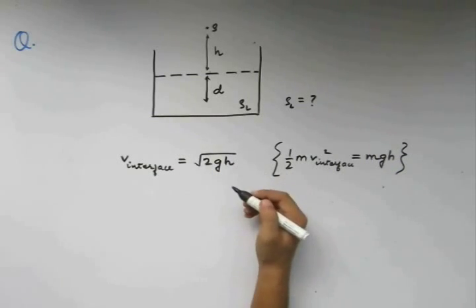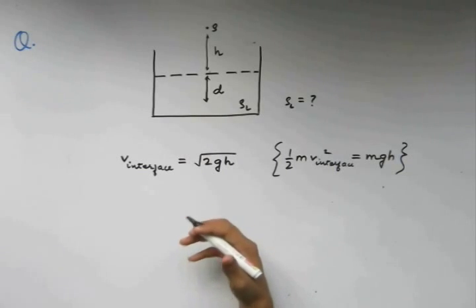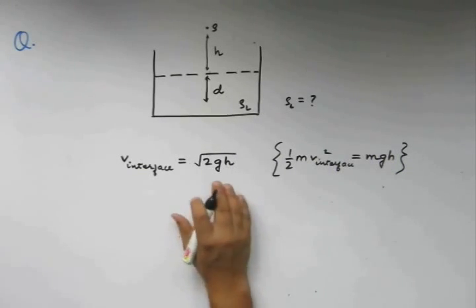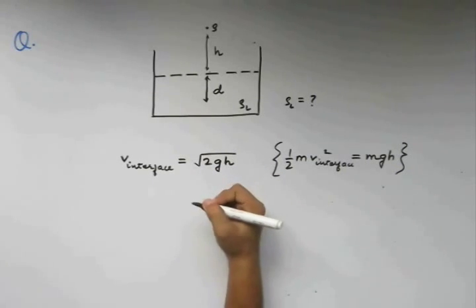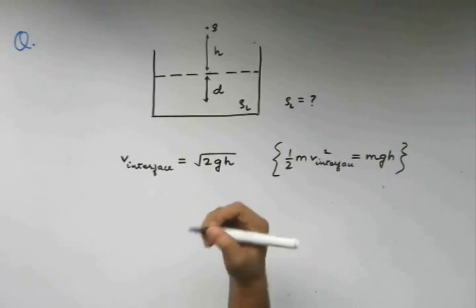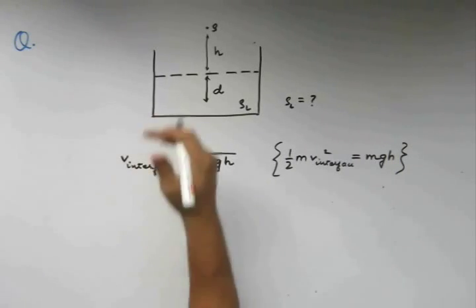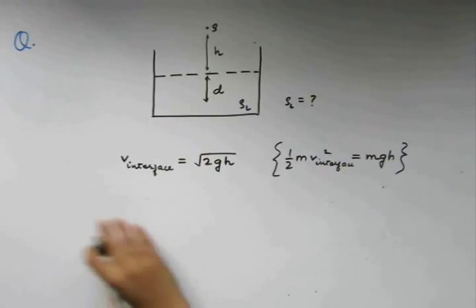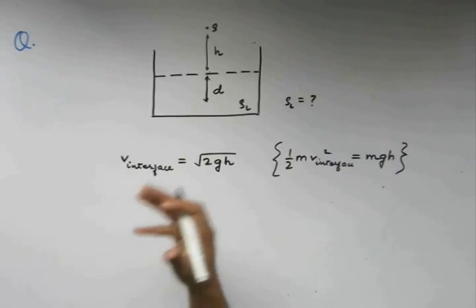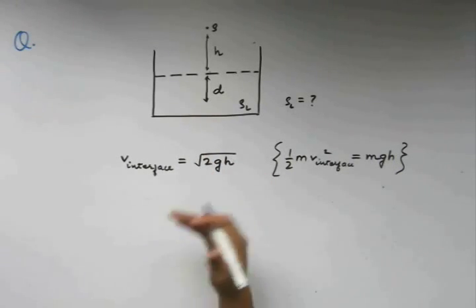We should consider this to be an important way to state that we should not be saying this is a body. This is rather a point mass. A body will be inviting more complex calculations and assumptions if we consider that this is going to go down this fluid. A body has a finite surface which will also include a lot of different aspects of forces and rotation which we are not considering.